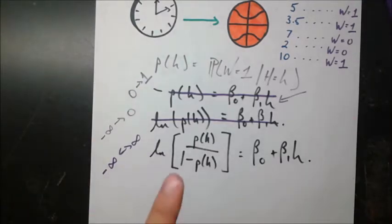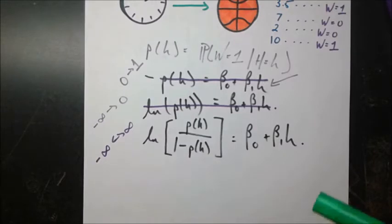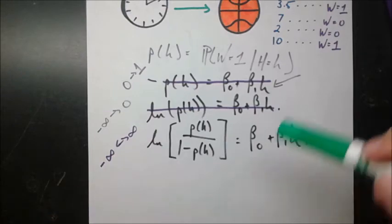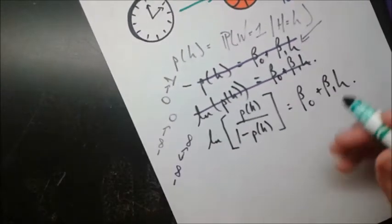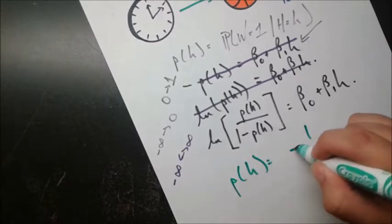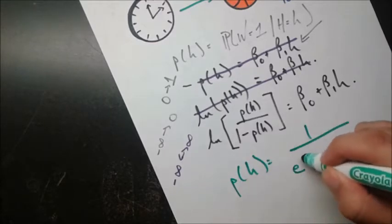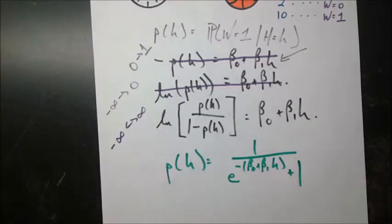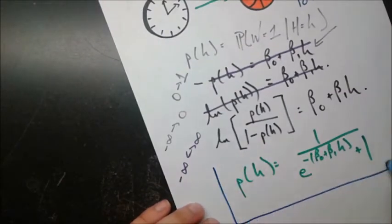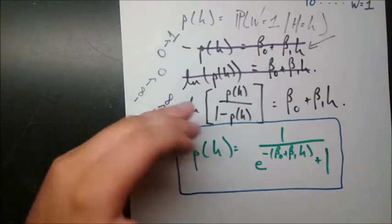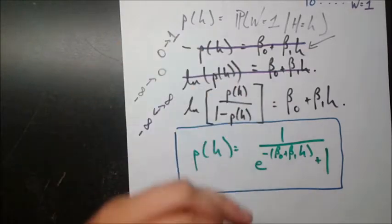Now what we want to do is isolate P of H — solve for P of H. Going through a series of steps, you take E to the power of both sides to get rid of the natural log, then do some cross-multiplication. In the end, the model will be: P of H equals 1 over E to the power of negative (beta naught plus beta 1 H) plus 1. This is how we get the logistic function by solving for P of H in the log-odds equation.